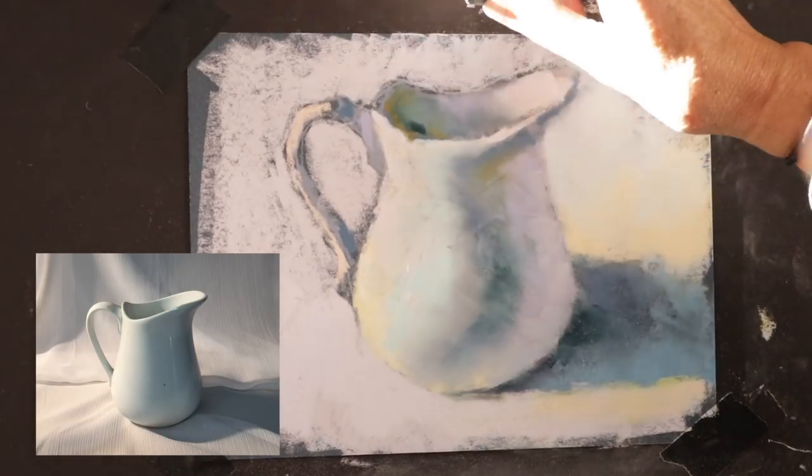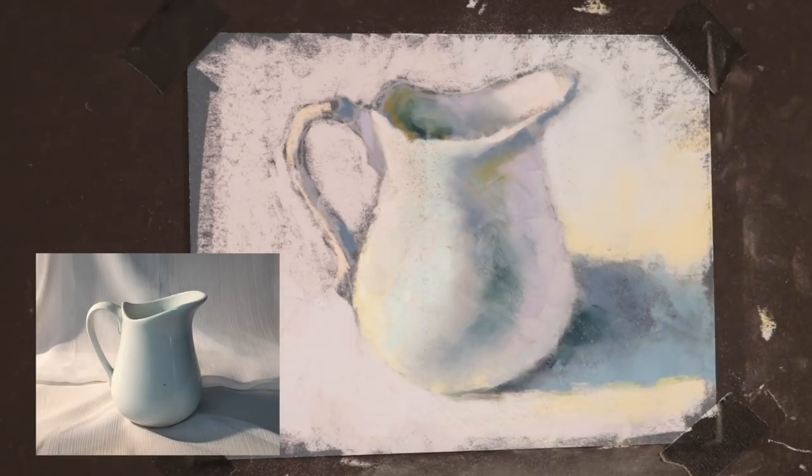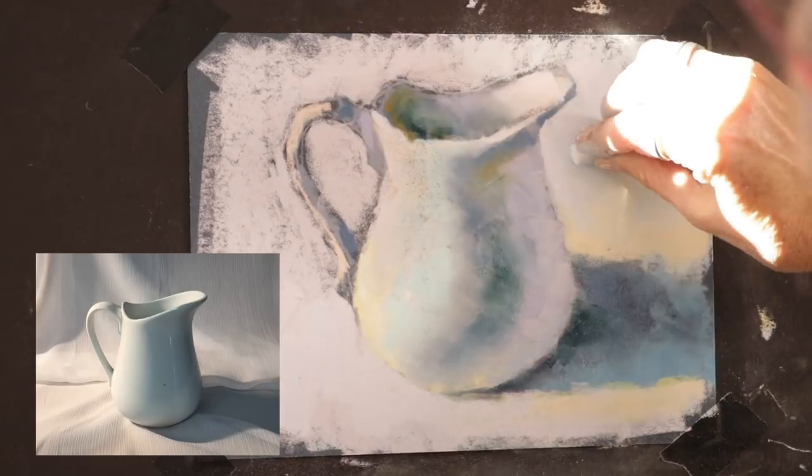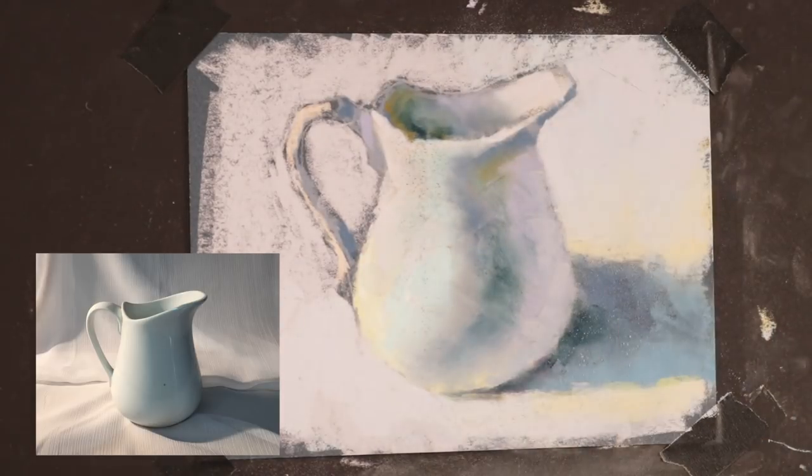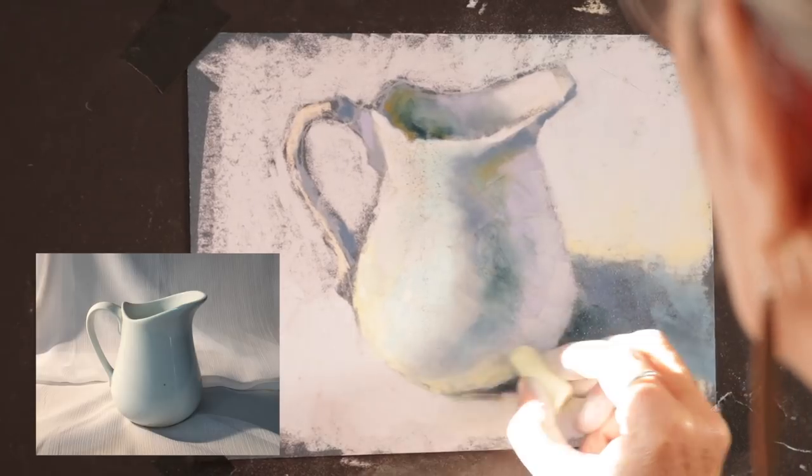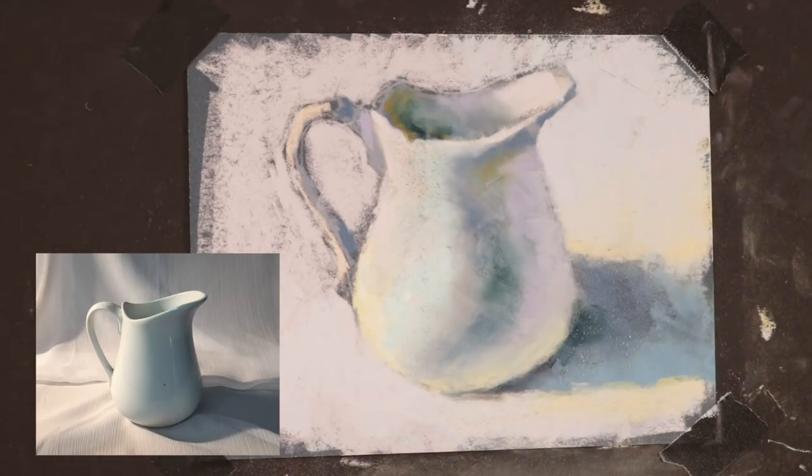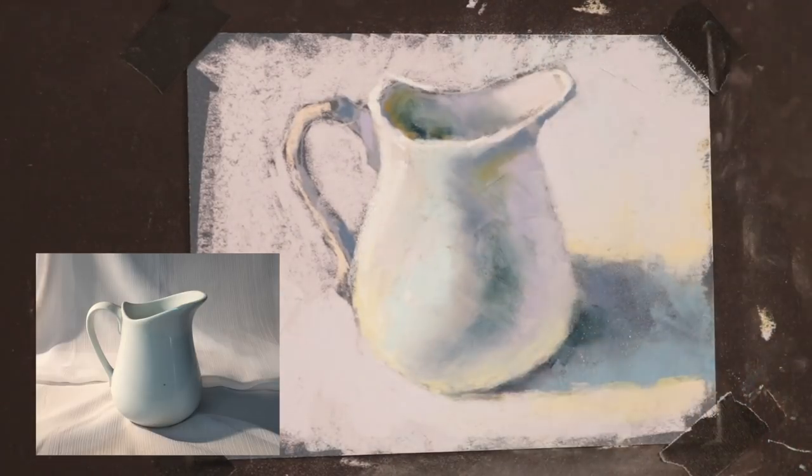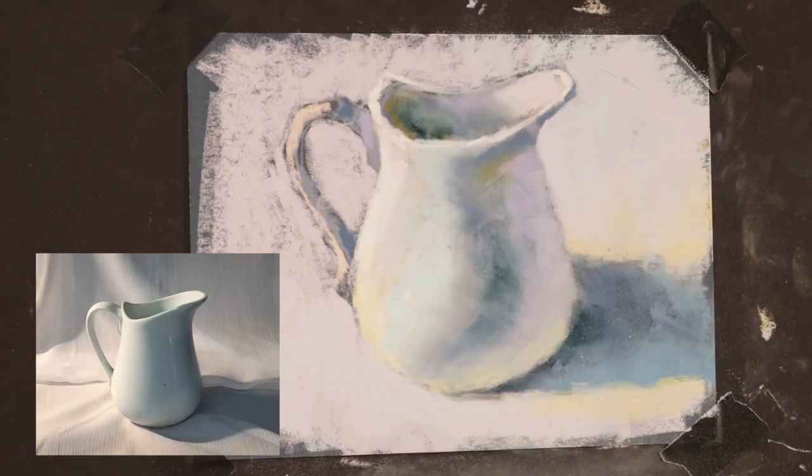It's kind of interesting how dark I have to go to get this white vase to appear to be white. I'm just carving a little bit out of the shape there, and that's good to do. Look at all the color that I'm getting in here—it's pretty neat.